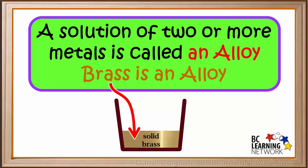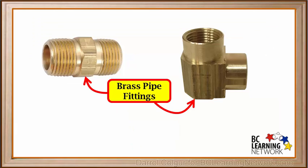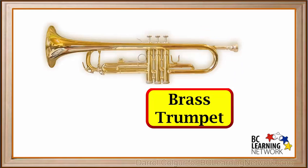So brass is an example of an alloy. It was made by mixing copper and zinc. Brass does not rust like steel, and it is quite strong. Therefore it's used to make pipe fittings, which are used in plumbing. Brass is also an ideal metal to make musical instruments out of. Brass is used to make many different things.